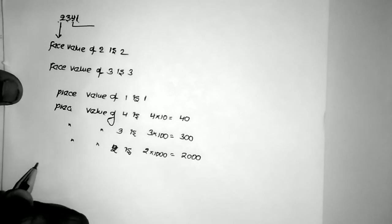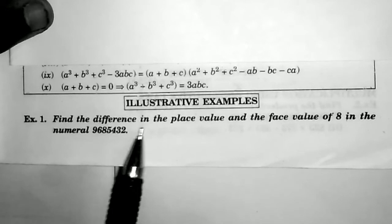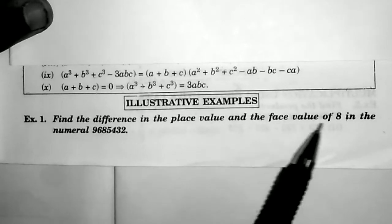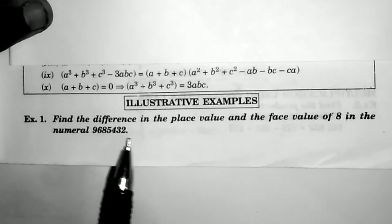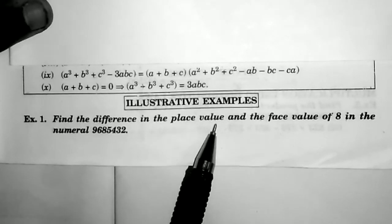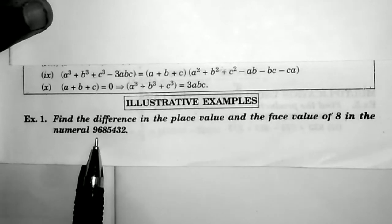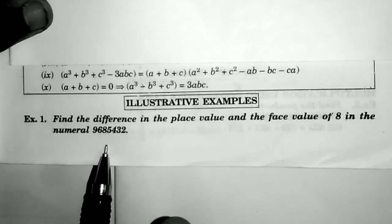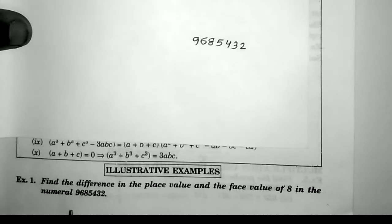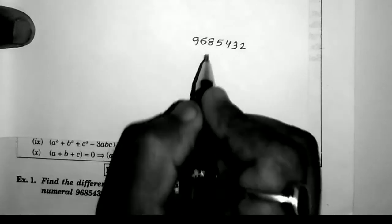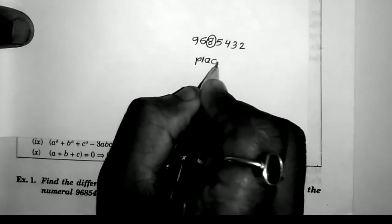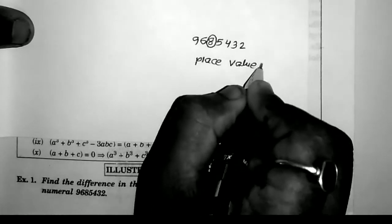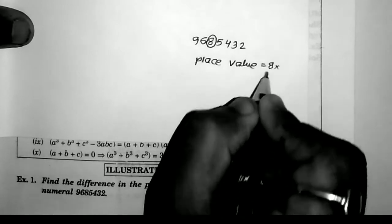Now coming to one example. Find the difference between the place value and face value of 8 in the number 9685432. So first I write the given number. What is the difference between the place value and face value of 8? Place value means we have to multiply the number with its position.